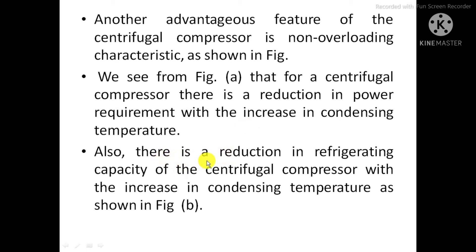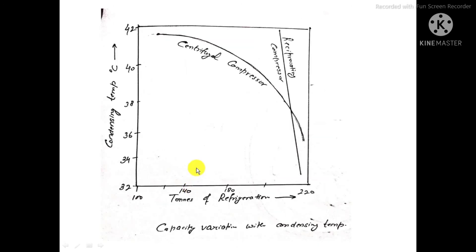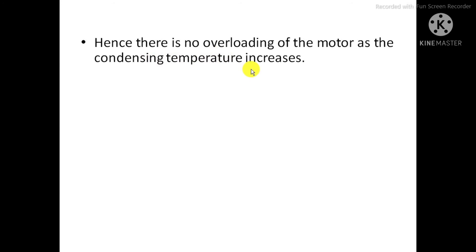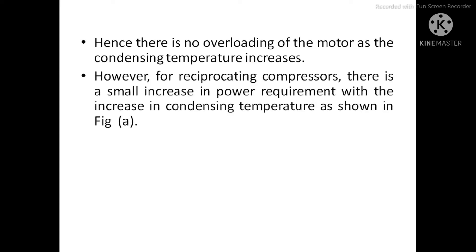There is also a reduction in refrigerating capacity of the centrifugal compressor with increase in condensing temperature, as shown in figure B. In this diagram the x-axis shows tons of refrigeration capacity and the y-axis shows condensing temperature. When we increase the condensing temperature, the refrigeration capacity decreases in centrifugal compressors. Hence, there is no overloading of the motor as condensing temperature increases, since the power requirement is less.